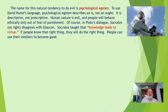The name of this natural tendency to do evil is psychological egoism. To use David Hume's language, psychological egoism describes an 'is' — how people are, not how they ought to be. It is descriptive, not prescriptive. Human nature is evil and people will behave ethically only out of fear of punishment. Of course, in Plato's dialogue, Socrates disagrees with Glaucon. Socrates taught that knowledge leads to virtue. If people know the right thing, they will do the right thing. People can use their intellect to become good — they want to do the right thing and can do so by studying good and evil.